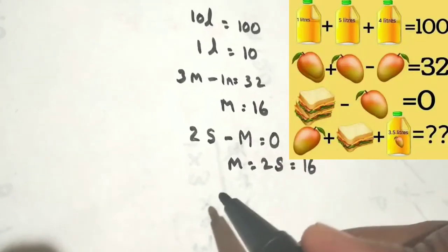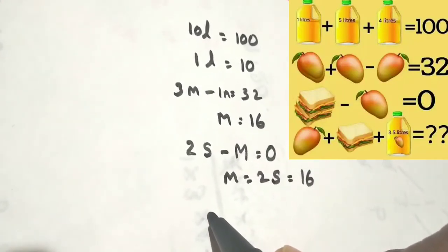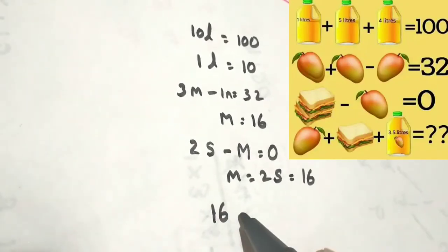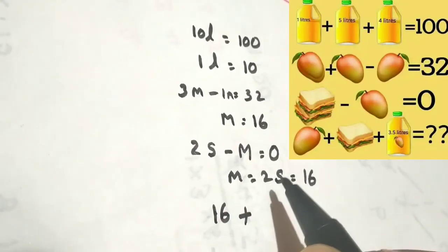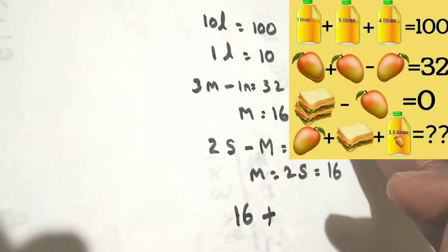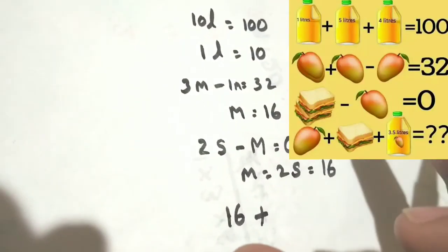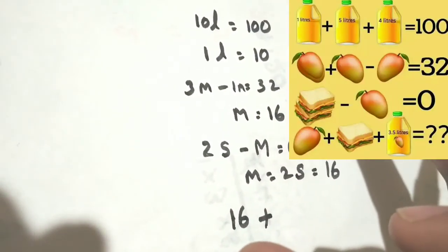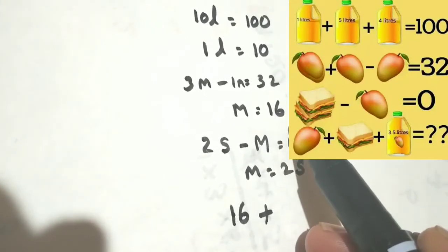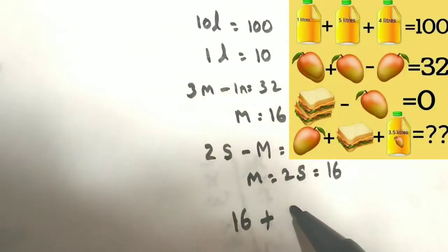Now find carefully: one single mango — how much is the single mango cost? 16 rupees. 16 plus double sandwich is 16, but if you observe the picture there is a single sandwich. So single sandwich will be 16 divided by 2, which gives you 8.